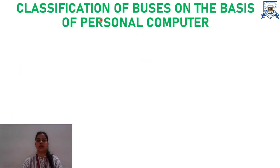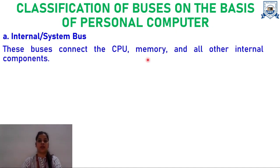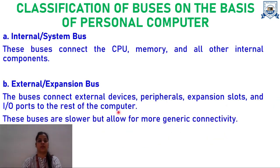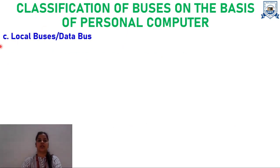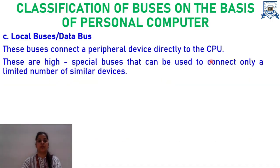Buses can be further classified on the basis of the personal computer. First is the internal or system bus, which connects the CPU, memory, and all other internal components. Second is the external or expansion bus, which connects external devices, peripherals, expansion slots, and IO ports to the rest of the computer — these are slower but allow for more generic connectivity. Third is the local bus or data bus, which connects a peripheral device directly to the CPU. These are highly specialized buses that can connect only a limited number of similar devices.